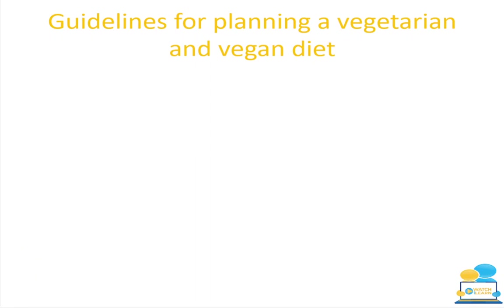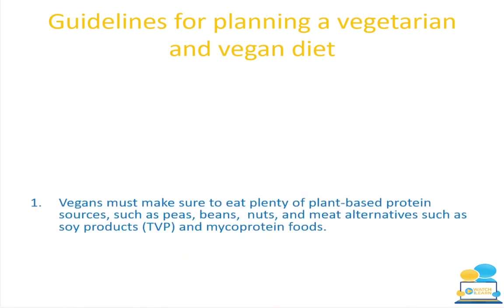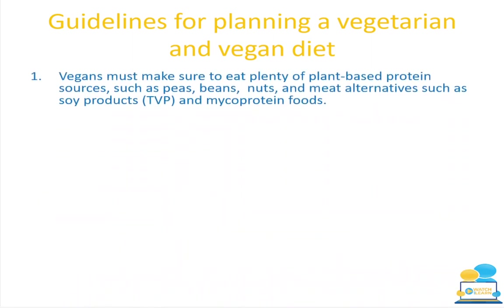These guidelines are tips to consider when planning a vegetarian or vegan diet — for yourself, a friend or family member. This also comes up in CBA 2 and is linked to the culinary food skills exam in third year, worth 50% of your grade. Vegans must eat plenty of plant-based protein — peas, beans, nuts, and meat alternatives such as soy products like textured vegetable protein and mycoprotein foods like corn.